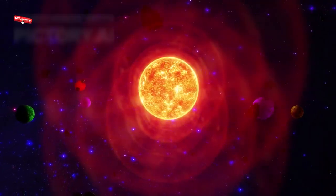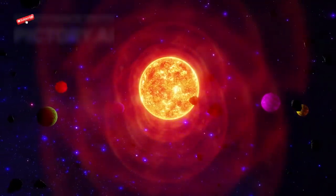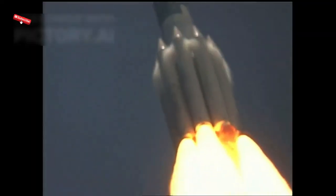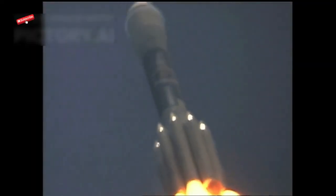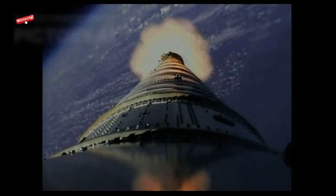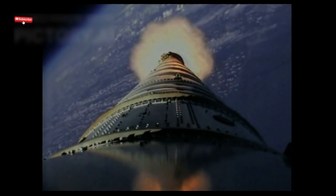Since then, both Voyagers have entered interstellar space. That means they've gone beyond the heliosphere, the bubble of space influenced by our Sun. Voyager 1 crossed the boundary in 2013, becoming the first human-made object to do so. Voyager 2 followed in 2018, proving it wasn't a fluke.